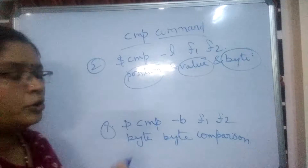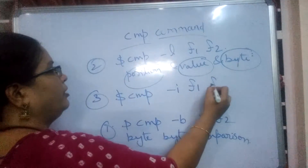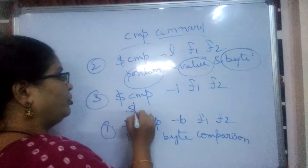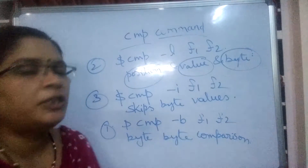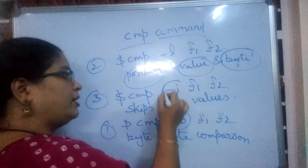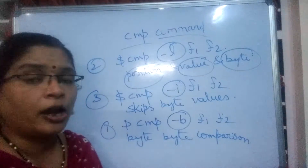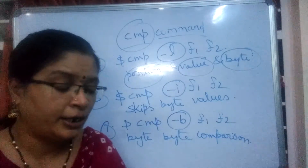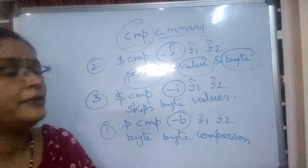The third option is dollar CMP hyphen I, F1, F2. Hyphen I means we are comparing both files by skipping the byte information — it skips byte values and only displays the mismatches where they occur. So hyphen B is byte by byte comparison, hyphen I is skipping the byte by byte comparison, and hyphen L gives detailed position, value and byte comparison. CMP is one of the most widely used filter commands in the Linux operating system.